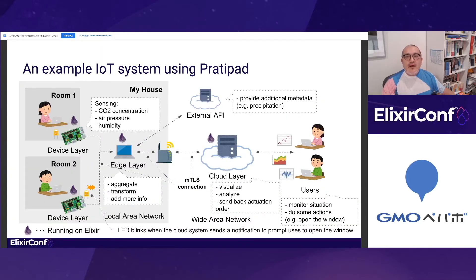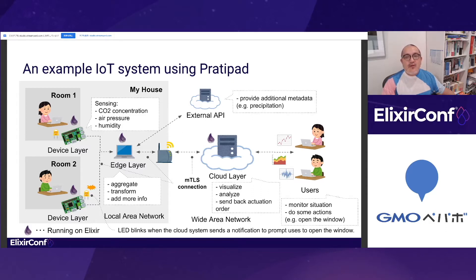This figure illustrates an example IoT system using Platypad. This system helps us to work in a sound environment. The devices measure some environmental data such as CO2 concentration, air pressure, and humidity. Then, the edge server implemented by Platypad adds some extra information, like precipitation, into data from the devices. Finally, the cloud application analyzes and visualizes the data for the users of the system.